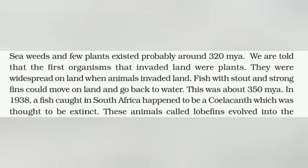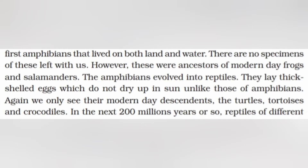The first organisms that invaded land were plants, and they were widespread. When animals invaded land, fish with stout and strong fins could move onto land and go back to water — this was about 350 million years ago. In 1938, a fish caught in South Africa happened to be a coelacanth, which was thought to be extinct. These animals, called lobe fins, evolved into the first amphibians that lived on both land and water.